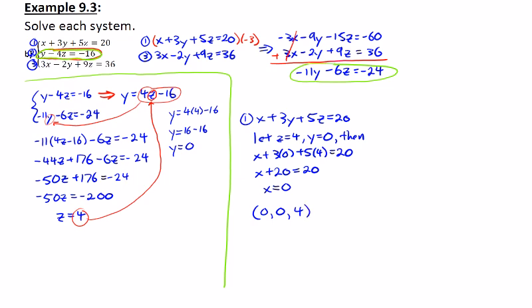And then we would want to check. So I'm going to start my check over here on the right margin. Starting with number 1, x plus 3y plus 5z equals 20. So that'll be 0 plus 3 times 0 plus 5 times 4 should be 20. And yeah, we end up very quickly getting 20 equals 20. So that one checks out.